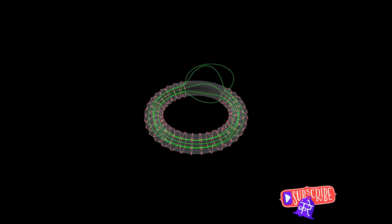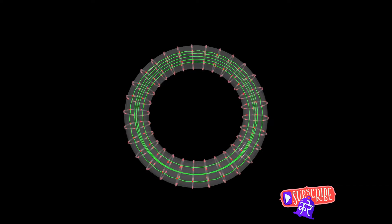The round design provides a closed-loop magnetic path, which minimizes magnetic leakage and makes the transformer more efficient. Let's delve into the heart of the transformer, the toroidal core.